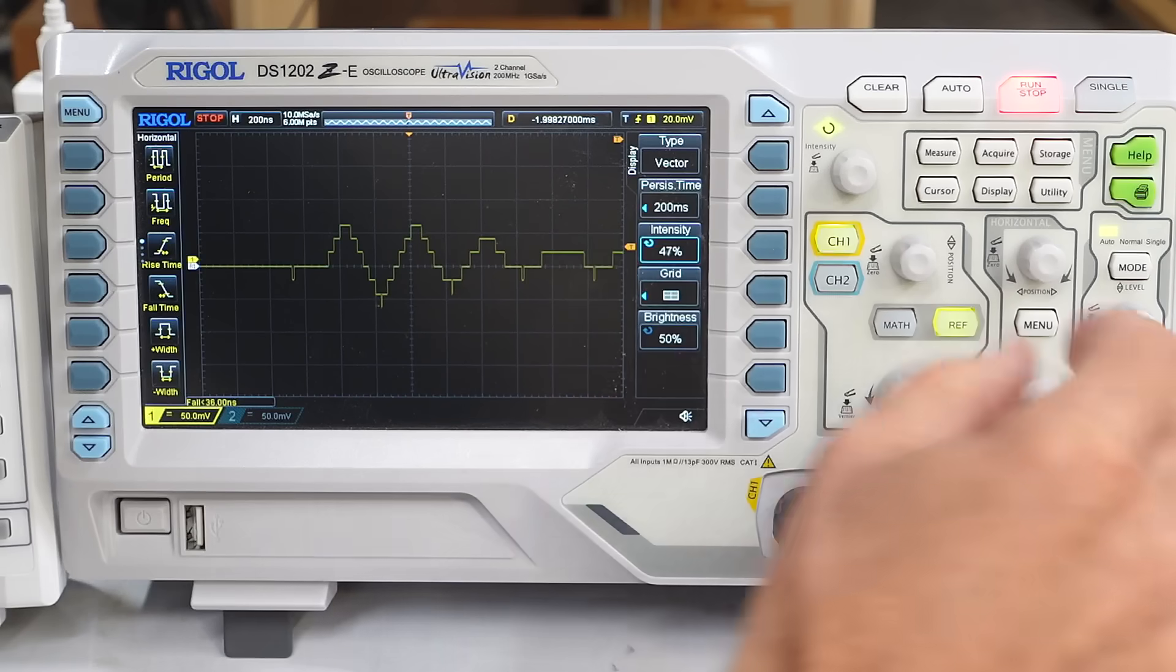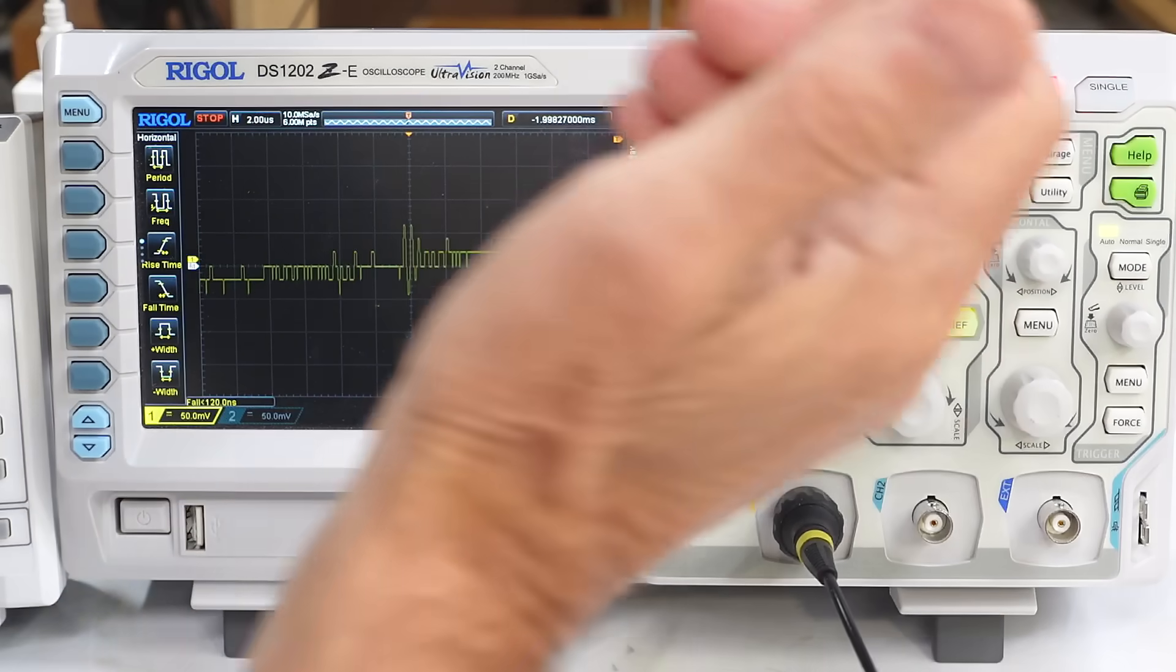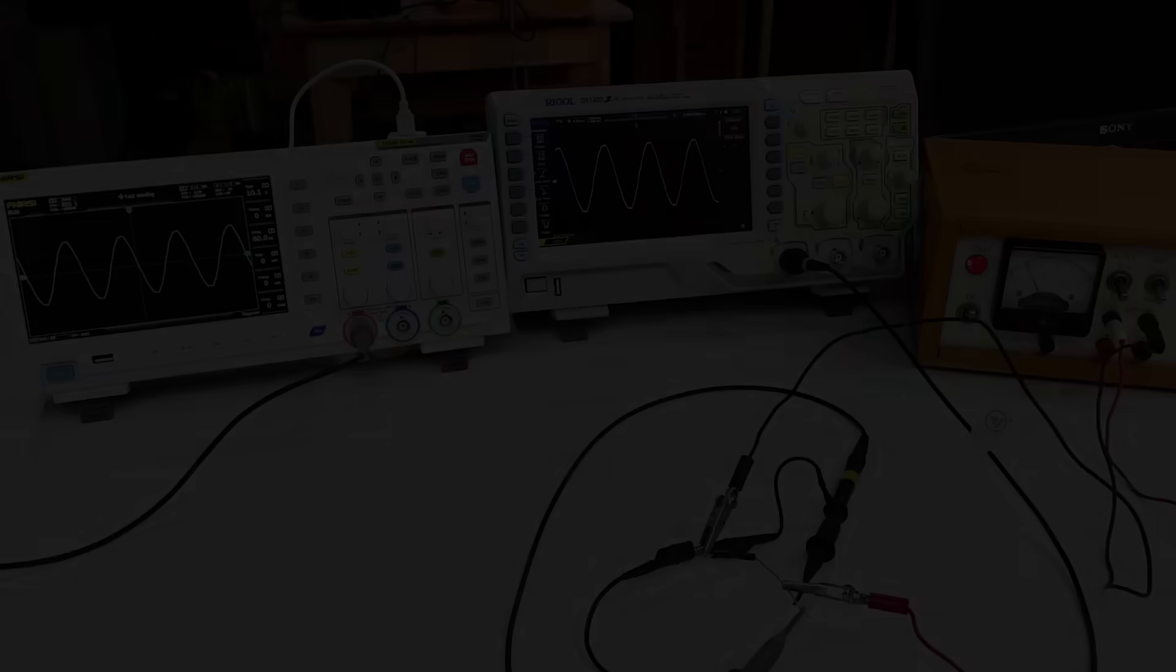And basically we can tell here, it's still got lots of samples across the screen. Because this thing has got a 6 million point trace buffer if I'm using one trace. If I've got two traces, then that's shared. So I only get 3 million points trace buffer versus just 700 on the FNRZ.